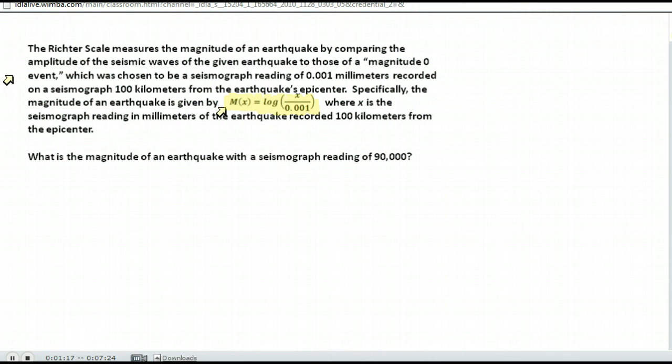So we just plug that number into our formula. We're finding m of 90,000, which would be the log of 90,000 divided by .001. Order of operations is very important. You need to do 90,000 divided by .001 first.